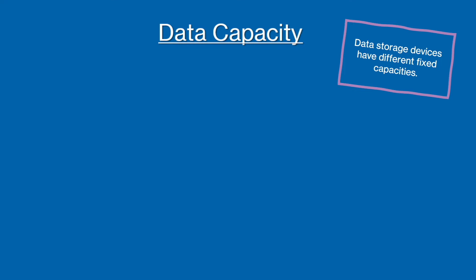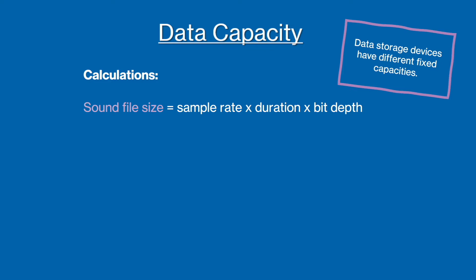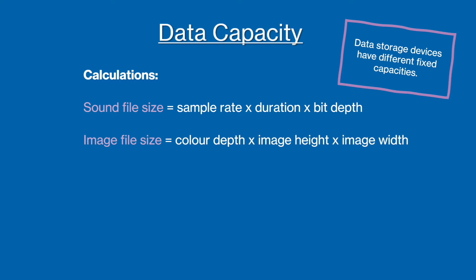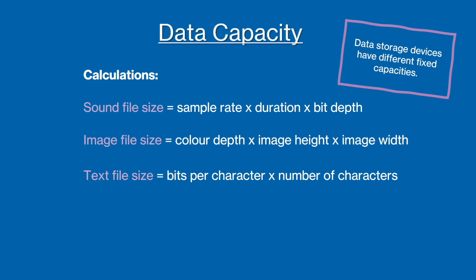As different data storage devices have different fixed capacities, we need to be able to calculate the size of the sound, image, or text file that you want to store, to know if the chosen storage device is big enough. To do this, you need to be able to recall and use three equations. The first is to calculate the size of a sound file, where you would do the sample rate times the duration times the bit depth. To find the size of an image file, you would do the color depth times the image height times the image width, noting that image height and image width are measured in pixels. And lastly, to calculate a text file size, you would do the bits per character multiplied by the number of characters.